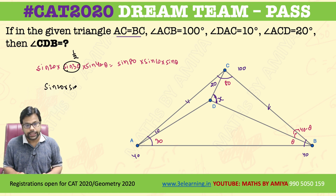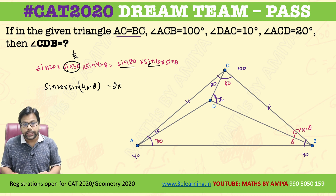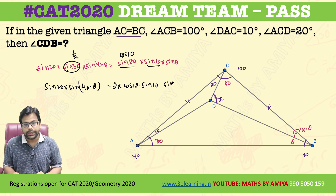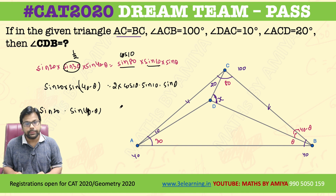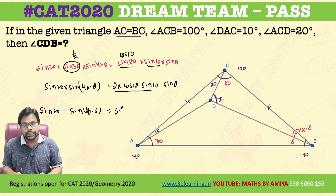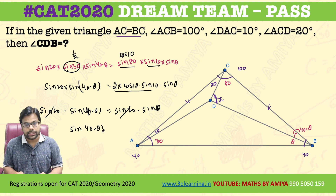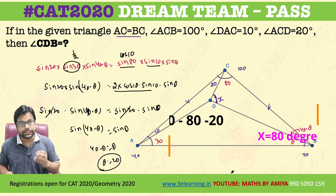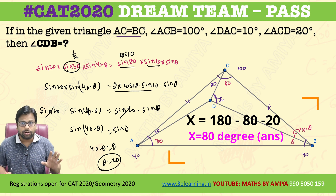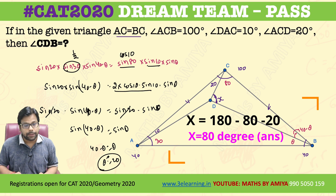So we have sine(20) × sine(40 − theta) = 2 × cos(10) × sine(10) × sine(theta). Now, 2 × cos(10) × sine(10) = sine(20). So the equation becomes: sine(20) × sine(40 − theta) = sine(20) × sine(theta). The sine(20) cancels from both sides, giving us sine(40 − theta) = sine(theta). Therefore, 40 − theta = theta, and theta equals 20 degrees. This is the basic application of the sine formula in geometry.